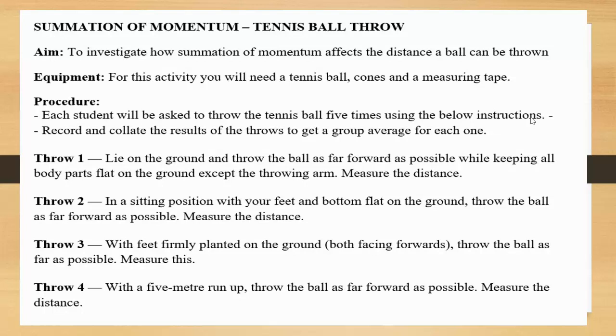You may remember this practical that we did. The first throw, you lie on the ground and throw the ball as far as you can whilst keeping all other body parts except the throwing arm flat on the ground. The idea being that you are only allowed to move one body part, the arm. You measure the distance. The second one, you're in a sitting position, and that's going to naturally mean you can do a little bit of rotation of your trunk and use your shoulder a little bit more. The third one, you're standing up now with your feet firmly planted on the ground, both facing forwards. You're not quite able to rotate as much, but you still are able to involve a lot more body movements than the previous two throws. The last one, it's a free for all. You have a five meter run up and you get to throw the ball as far forward as possible.